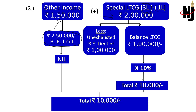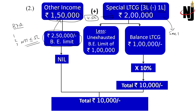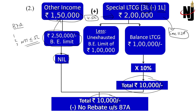After adjusting the unexhausted 1 lakh basic exemption against the 2 lakh LTCG, only balance 1 lakh is taxable at 10%, giving tax of 10,000. For the rebate under 87A: NTI is 1,50,000 plus 3,00,000 = 4,50,000 which is within the 5 lakh range. However, rebate under 87A is not available because the entire tax of 10,000 comes from 112A, and 87A rebate is not allowed against tax computed under section 112A.